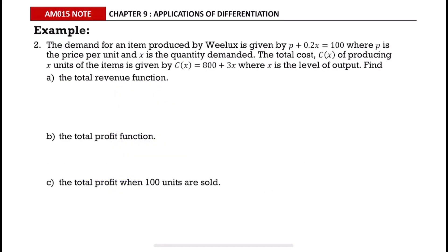Question 2: The demand for an item produced by Relax is given by p + 0.2x = 100, where p is the price per unit and x is the quantity demanded. The total cost of producing x units is given by C(x) = 800 + 3x, where x is the level of output — meaning the number of products produced. Find the total revenue function.